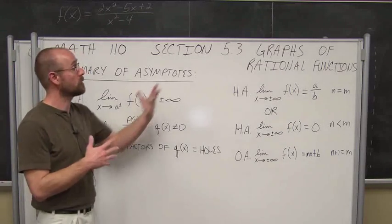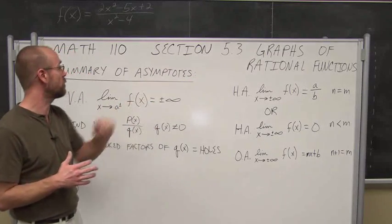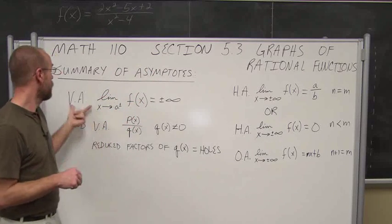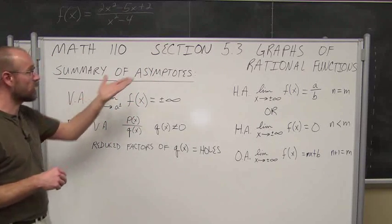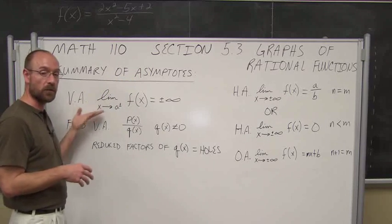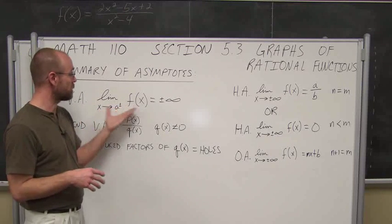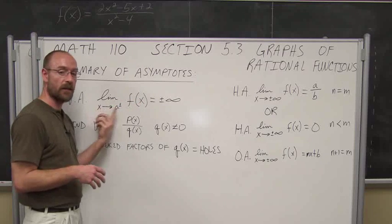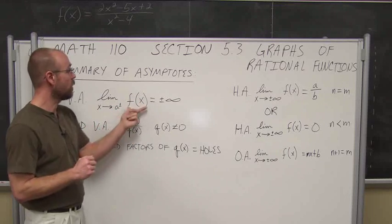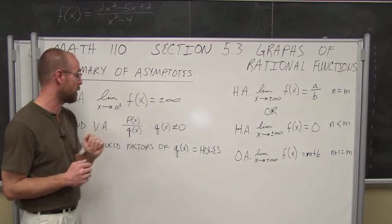To utilize graphing rational functions, we have to review what we talked about in the previous section, 5.2, and we're just going to summarize asymptotes. The first thing we usually find when it comes to graphs is the domain, and that domain helps us determine what our vertical asymptotes are, if there are any. A vertical asymptote is basically asking us, as x approaches some number from the left or the right — a domain restriction — what is the behavior of the function? Does it approach positive or negative infinity, one or the other?